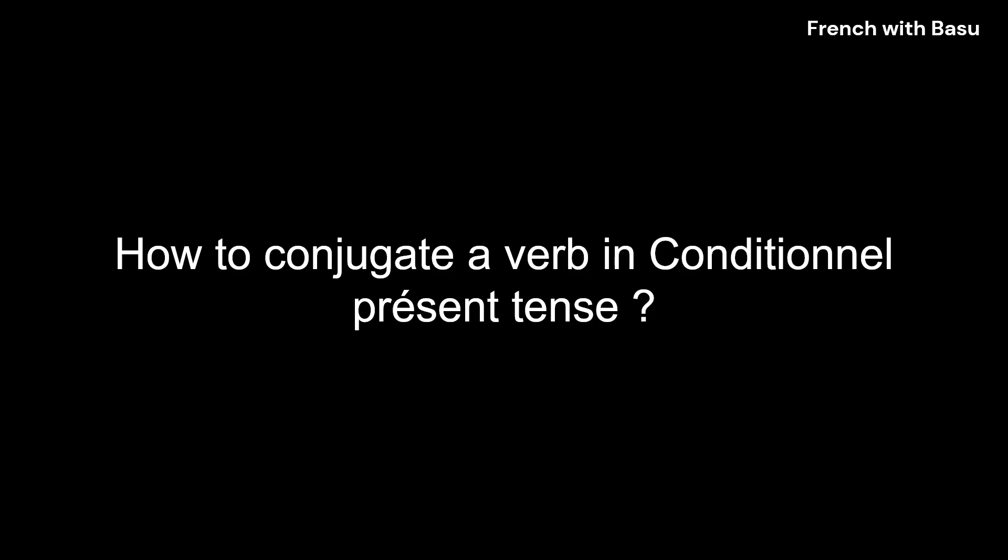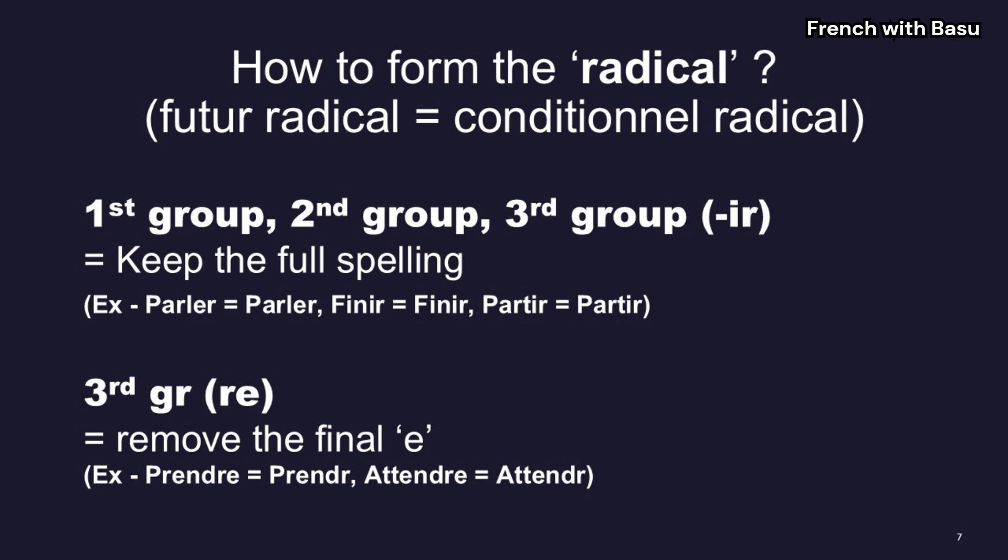Let's see how to conjugate verbs in conditionnel présent. Step 1: how to form the radical for le conditionnel présent. It's very simple — it's exactly the same as le futur simple radical. For the first group, er-ending verbs, we keep the full spelling as it is. For example, parler remains parler.